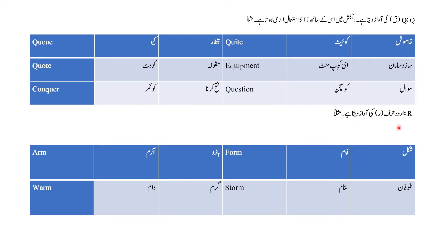اگلے لیٹر R ہے اور R اردو کے اندر رے کی آواز دیتا ہے۔ مثلاً آرم (بازو) A R M - یہاں پہ R مڈ میں use کیا گیا ہے اور اس کی آواز آر کی ہے۔ وارم (گرم) - یہاں پہ بھی R، M سے پہلے اور A کے بعد استعمال کیا گیا ہے۔ فارم (شکل) اور سٹارم (طوفان) - ان سب کے اندر R کی آواز رے کی ہے۔